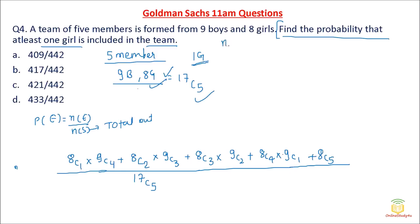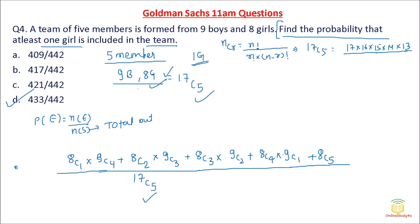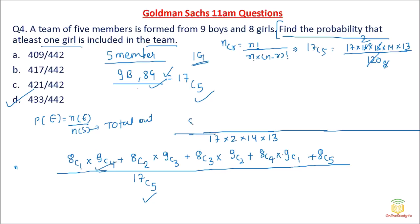nCr equals n factorial divided by (r factorial × (n−r) factorial). The answer will be option D. For 17C5: 17 × 16 × 15 × 14 × 13 divided by 5! (which is 120), giving us 17C5. Then 8C1 = 8, and for 9C4: (9 × 8 × 7 × 6) divided by 4! (24), which equals 9 × 2 × 7 = 126.